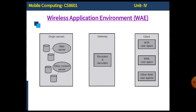Now let us see how the communication is initiated. The client starts sending the request — an encoded request, which is the simplified and compressed version of the Wireless Markup Language request. It reaches the gateway, which reads the encoded request and starts processing by running the decoder. The decoder will convert the encoded request into a standard request that the origin server can understand.